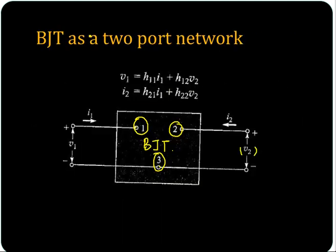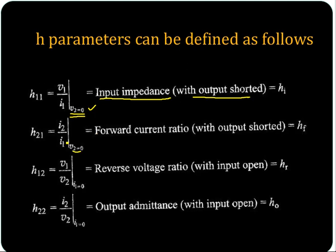H21 is equal to I2 by I1 for V2 equal to 0, when output is shorted. So what is this? The ratio of two currents I2 by I1 — output current by input current. So it is a forward current ratio with output shorted.